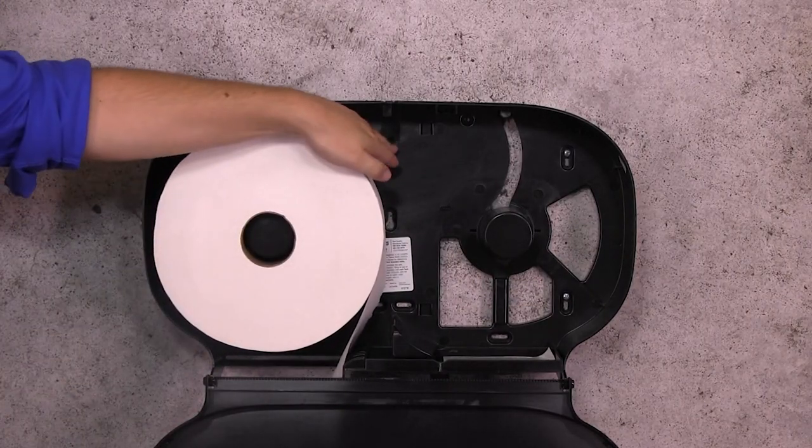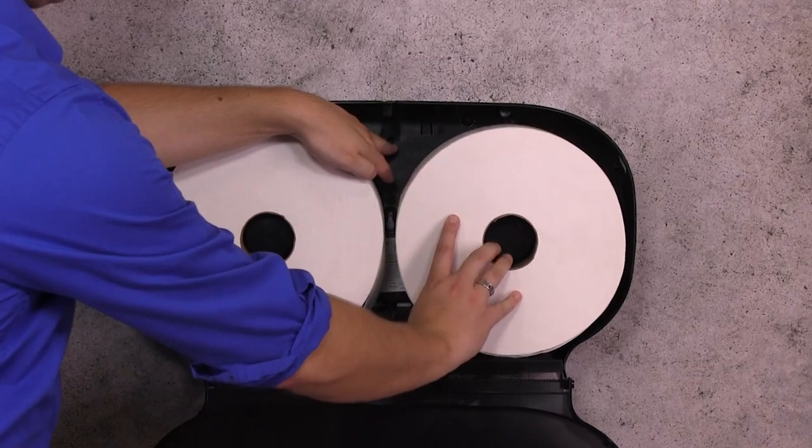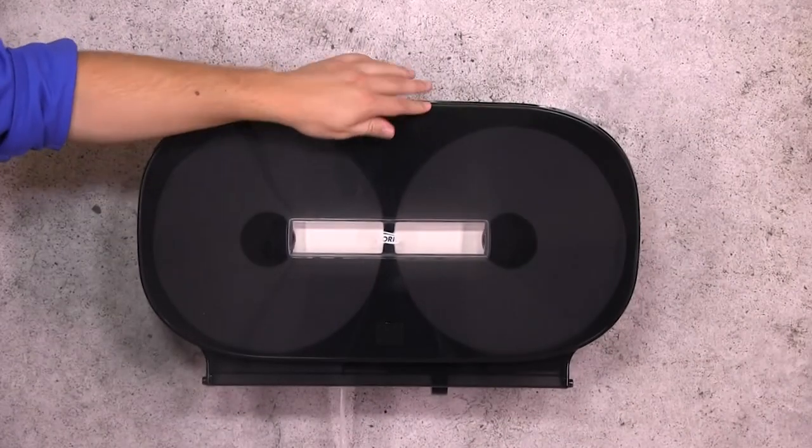Load a new Tork Jumbo Bath Tissue Roll onto any available roll supports. Release the lever and close the cover.